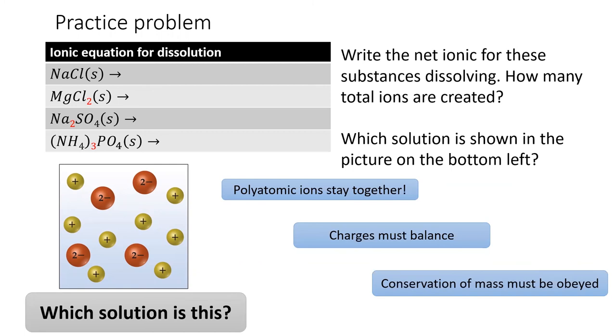Keep in mind that polyatomic ions do not break apart into their individual atoms. They stay together as a charged polyatomic ion. You can check your work by checking that the charge is balanced and that conservation of mass is obeyed. Pause the video now and give it a try.